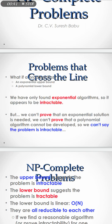What is the problem? Actually, what is an exponential upper bound and a polynomial lower bound? We have only found exponential algorithms for certain problems, so it is considered intractable — meaning we use exponential algorithms and cannot trace the solution. But we can't prove that an exponential solution is needed, and we can't prove that a polynomial algorithm cannot be developed, so we can't say the problem is truly intractable.